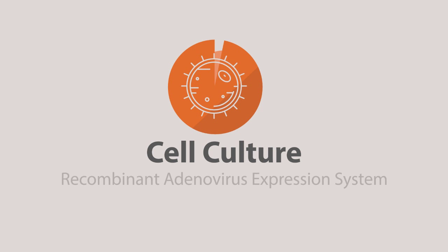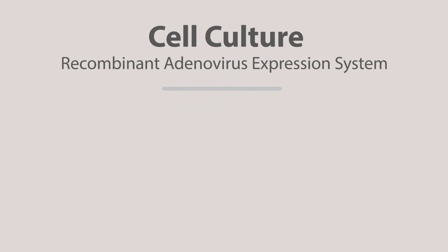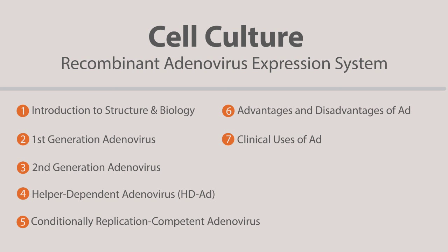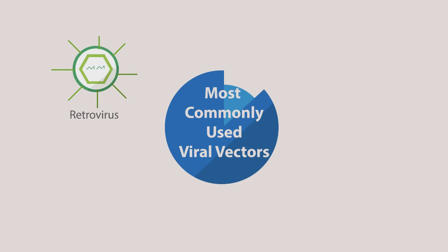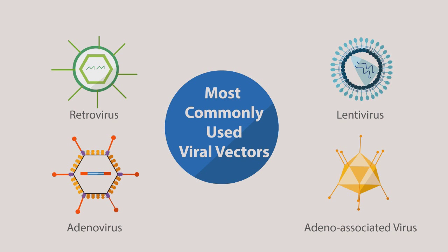Welcome back to Applied Biological Materials Cell Culture Series. In this video, we will introduce the recombinant adenovirus expression system. Viral vectors are tools commonly used to express exogenous genetic materials in vivo or in vitro. Among them, the most commonly used viral vectors are retrovirus, lentivirus, adenovirus, and adeno-associated virus.